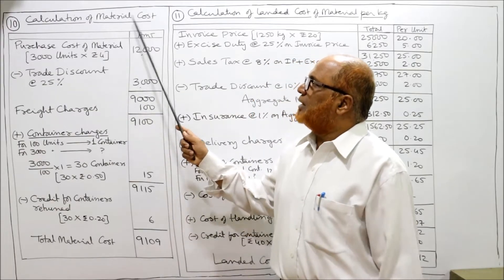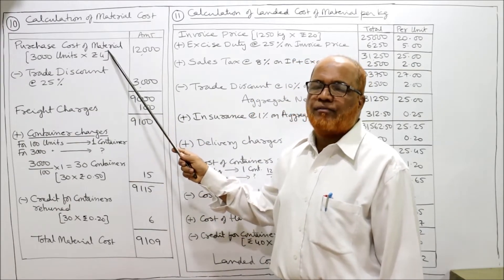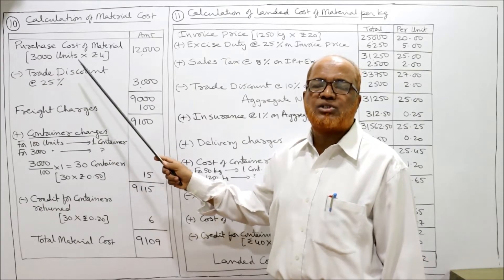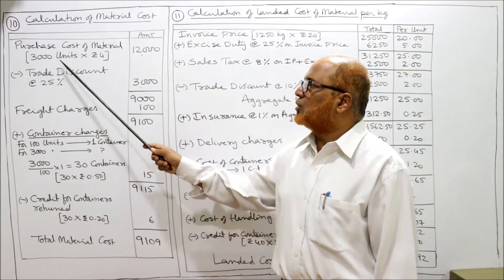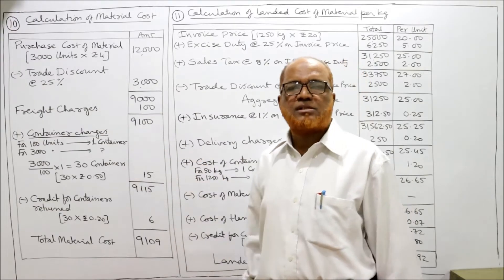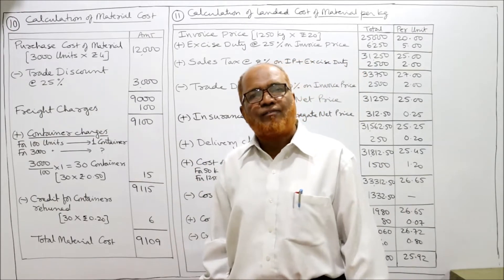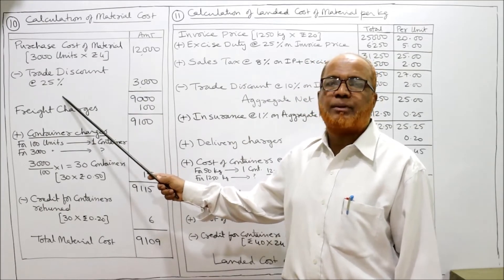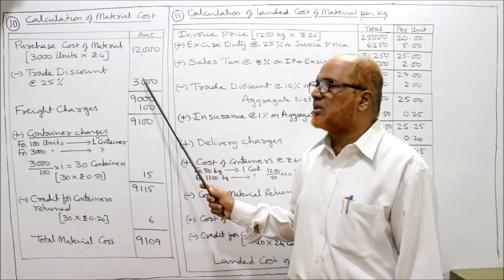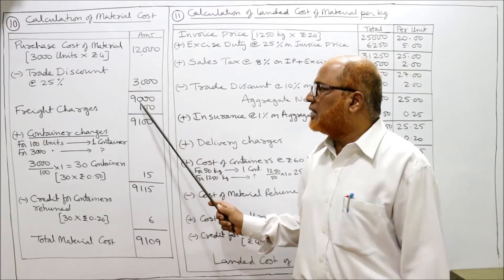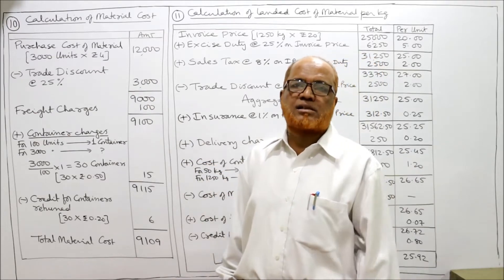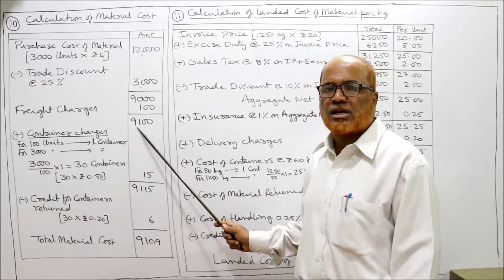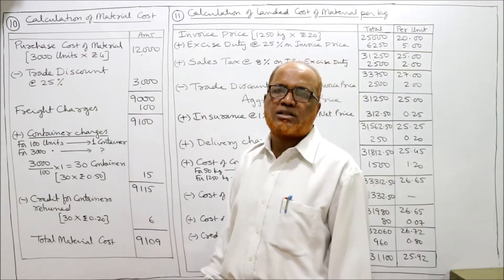Calculation of material cost: Purchase cost — we are purchasing 3000 units at four rupees each, so 3000 × 4 = 12,000 rupees. From this we subtract trade discount of 25%, which is 3,000 rupees, giving 9,000. To this we add freight charges of 100 rupees, giving 9,100. Now we add container charges.